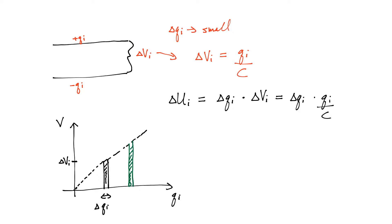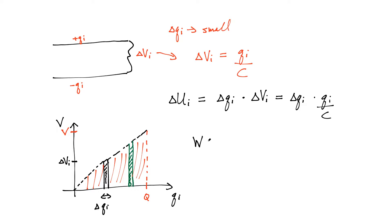At the beginning, to transfer the first little bit of charge it's very easy because there's no other charge on the plates — the battery does very little work. Once I've charged this capacitor to have some total charge Q and some total potential difference V, the area under the curve of this entire graph is equal to the work done by the battery, which equals the change in total potential energy.